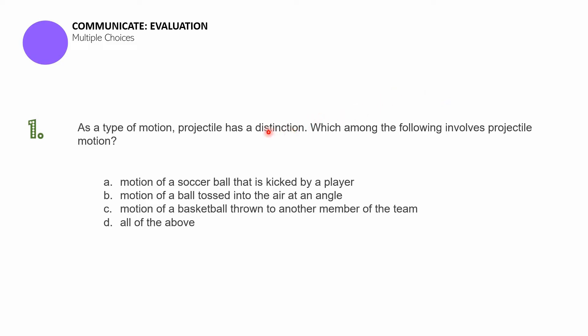For question number one, as a type of motion, projectile has a distinction. Which among the following involves projectile motion? A, motion of a soccer ball that is kicked by a player. B, motion of a ball tossed into the air at an angle. C, motion of a basketball thrown to another member of the team, or D, all of the above.